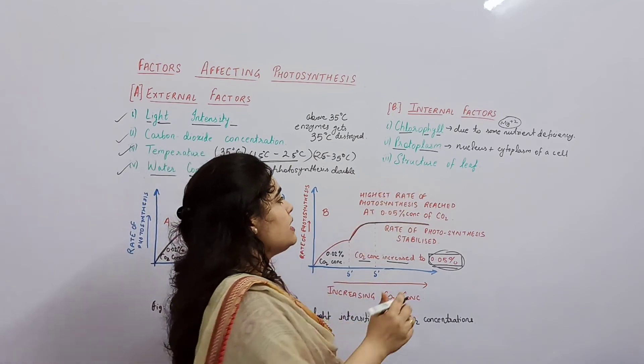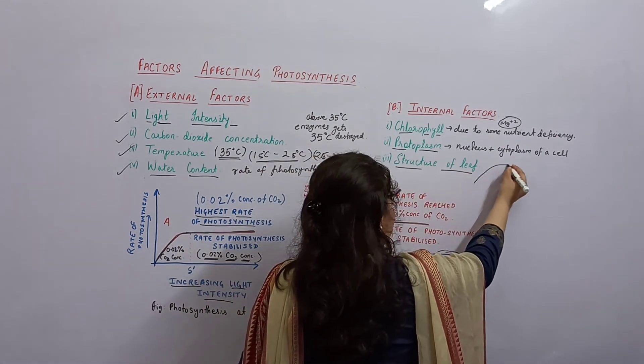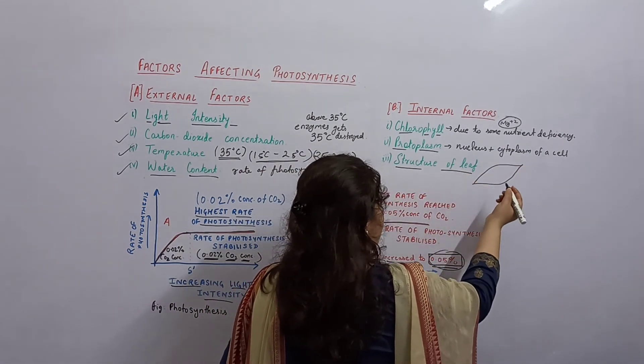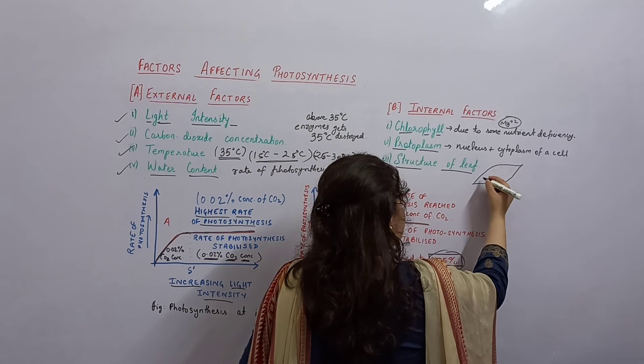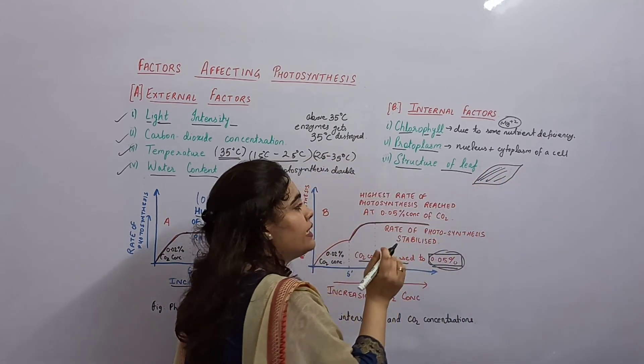Next we have structure of leaf. The leaf has high surface area and chlorophyll. If there is a cuticle present, what happens? Photosynthesis will be affected.